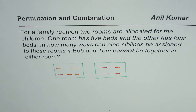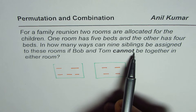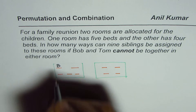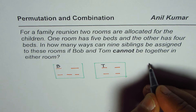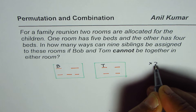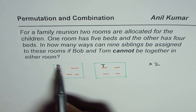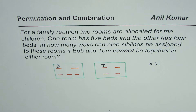Now, what we are given here is that Bob and Tom cannot be together. So let's first put Bob in this room and Tom in the other room. Remember, there are two such combinations — since Tom could be in the first room and Bob in the second room — so there are two ways in which this can be arranged. Let me write times two.